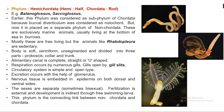Mostly these are free-living, but some animals like Rhabdopleura are sedentary — completely non-active, remaining at one place. The body is soft, vermiform, and unsegmented, divided into three parts: the proboscis, the collar, and the trunk. The alimentary canal is complete and straight or U-shaped. Respiration occurs through numerous gills opened by gill slits.